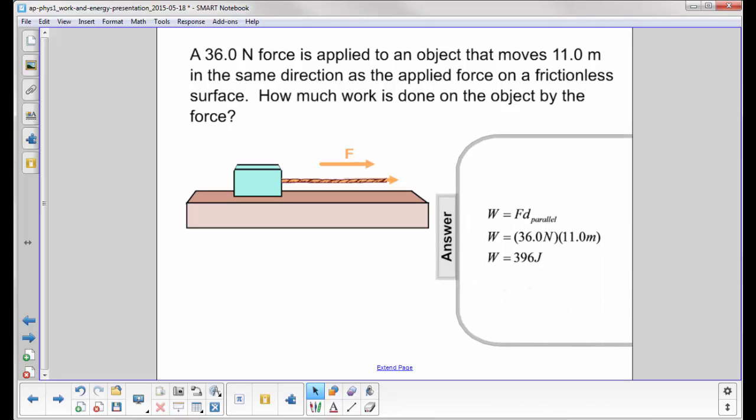We use work is equal to force times the displacement that's parallel to the direction of the force. So we have our force here, 36 Newtons. It displaces 11 meters and we get an answer of work is 396 joules.